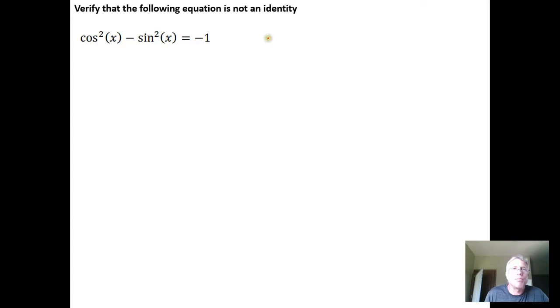So here's another example. Verify that the following is not an identity. Just to drive home the fact that it can work for some values of x, let's say we let x equal pi over two.